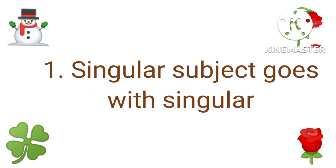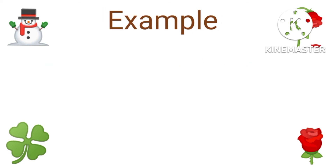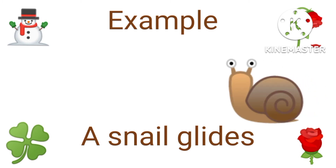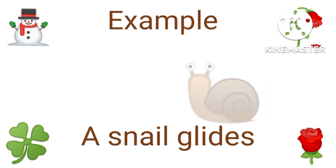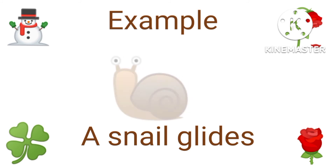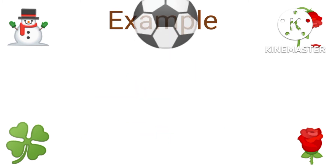Singular subjects go with singular verbs — that's trick number one. Example: a snail. A snail glides. A snail is one, so you say 'a snail glides.' Because a snail is one, it uses a singular verb that goes with S.